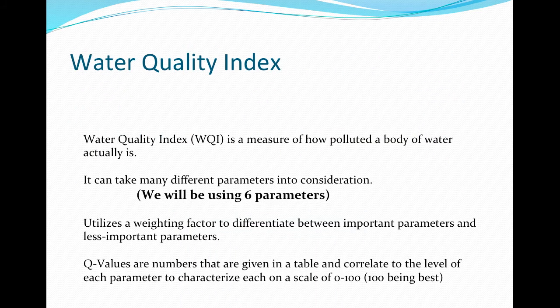We will continue this lesson by calculating the Water Quality Index score for the water sample provided by your teacher. In this lab, we will measure six water quality parameters. Once you have experience calculating the WQI, play the Fishkill game as part of the Virtual Boat available at the App Store. This game will allow you to see how different sources of pollution impact water quality parameters along the Ohio River.